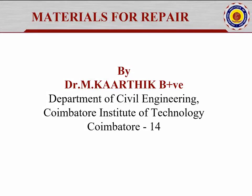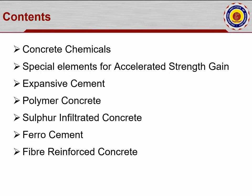The next chapter is Materials for Repair. The contents covered in this topic are: number one, concrete chemicals; number two, special elements for accelerated strength gain; number three, expansive cement; number four, polymer concrete; number five, sulfur infiltrated concrete; number six, ferro cement; and number seven, fiber reinforced concrete.